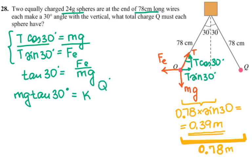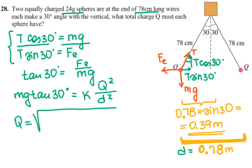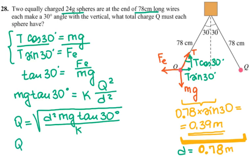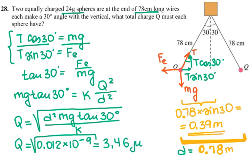They ask for the total charge on each sphere. Rearranging gives: Mg times tangent 30 equals the electric force, which equals kQ squared over r squared. Solving for Q: Q equals the square root of r squared times Mg times tangent 30 divided by k (9 times 10 to the 9). The calculation gives Q equals 3.46 microcoulombs, where micro is 10 to the negative 6.